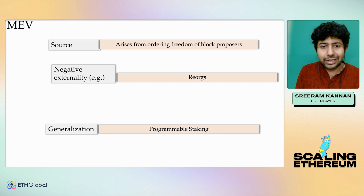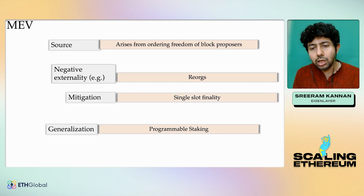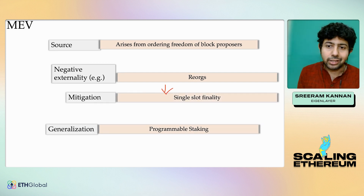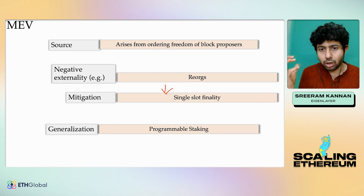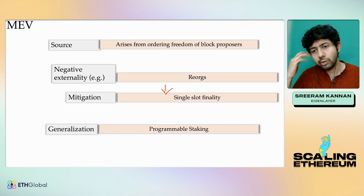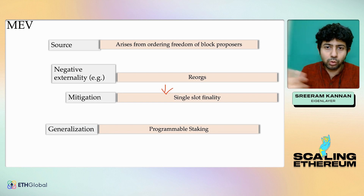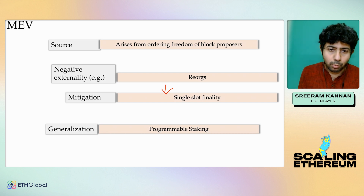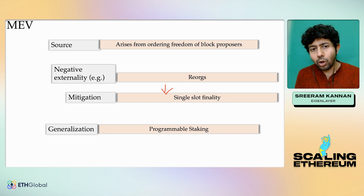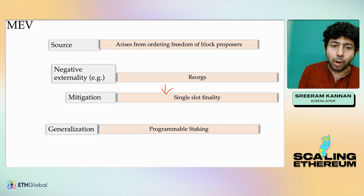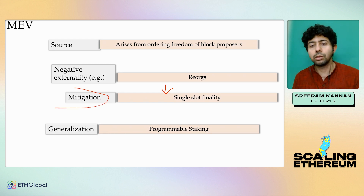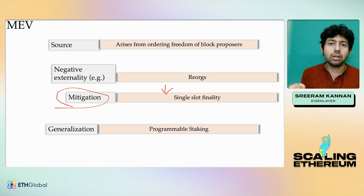One way to mitigate re-orgs is by using things like single slot finality. In Proof-of-Stake, once you have enough votes cast on a given block, you can finalize that block. Any finality violation — if two blocks are proposed with different orders — means the block proposer can be slashed. So one way of thinking about it: the mitigation is possible because there is staking and there is slashing.